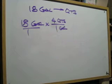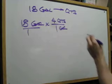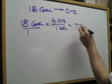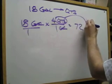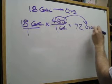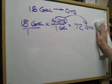So we do 18 times 4. And when we take 18 times 4, we end up getting 72 quarts, because that's what we had left as far as a unit of measure that we did not cross out.